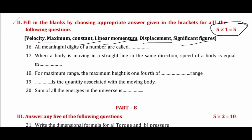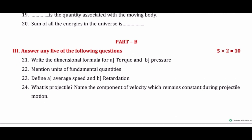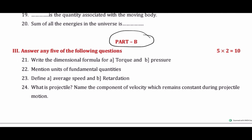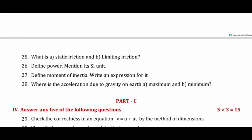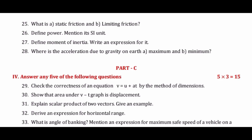Next is Part B. This section contains only two-mark type questions. Each question carries two marks. You have to answer any five questions out of eight — five into two equals ten marks. Three extra questions are provided, so you answer any five out of eight.